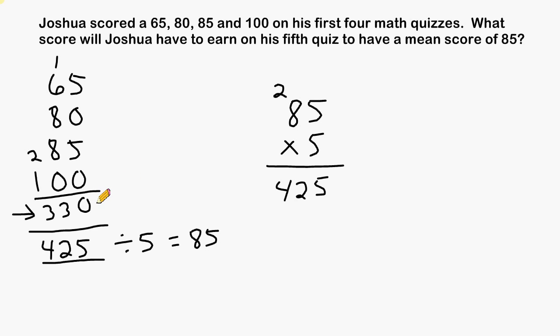So we have to figure out what that fifth score is so he has a total of 425. And to find that difference, we can just take 425 and subtract 330 from it.